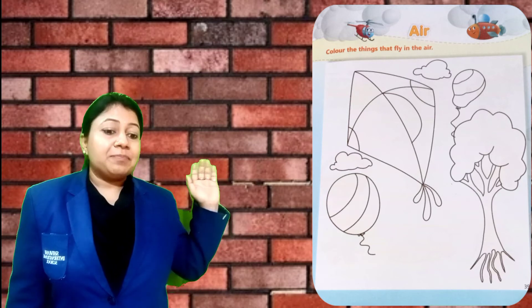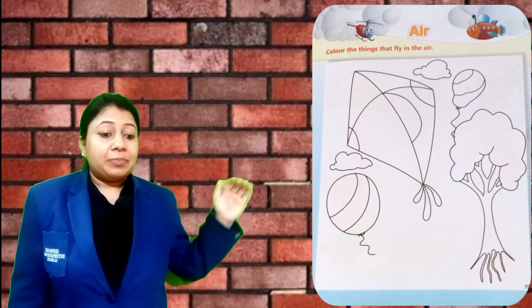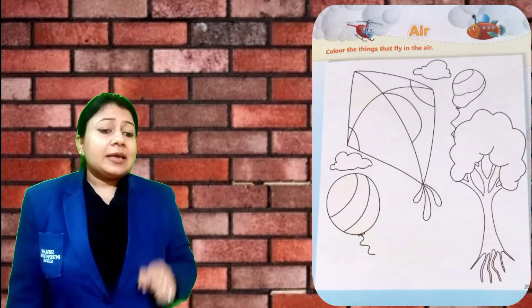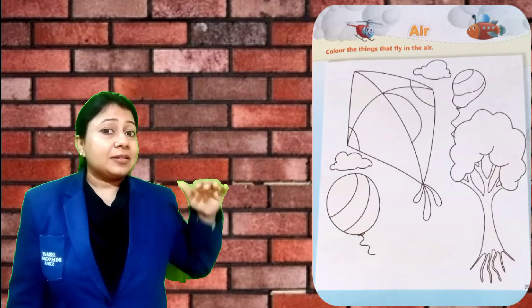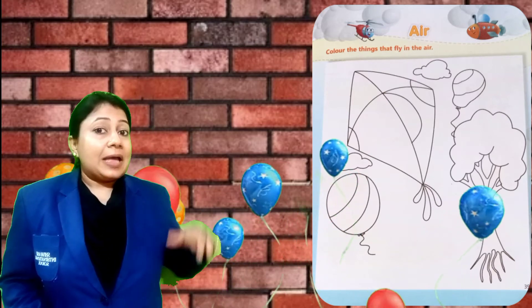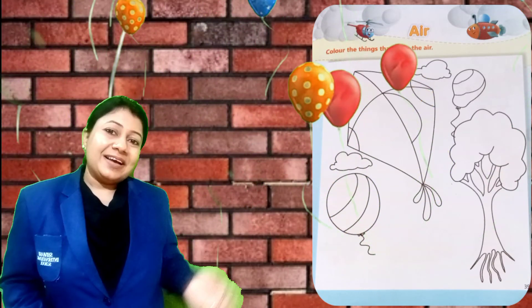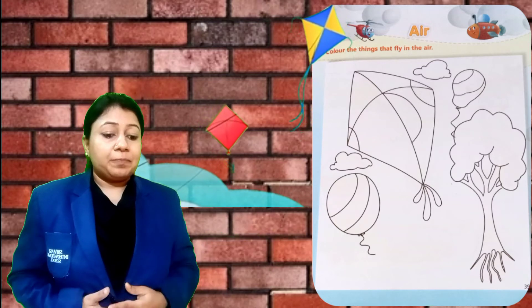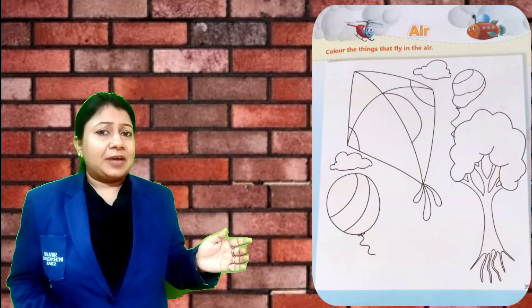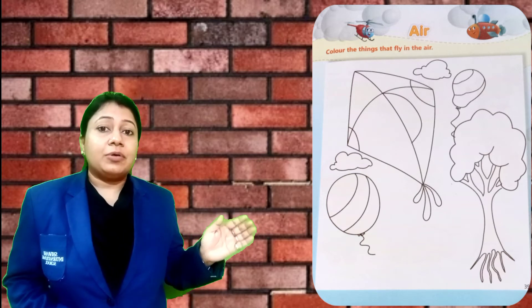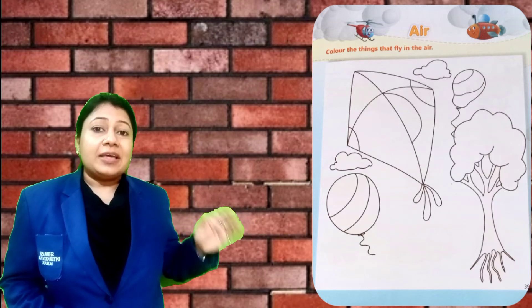First, what is the instruction? Color the things that fly in the air. There are pictures of some things here. Let's see which things can fly in the air. First picture — balloon. Balloon is flying in the air. Kite — kite is also flying in the air. Cloud — cloud is also flying in the air. And tree — tree can't fly in the air. So color all those things which fly in the air.